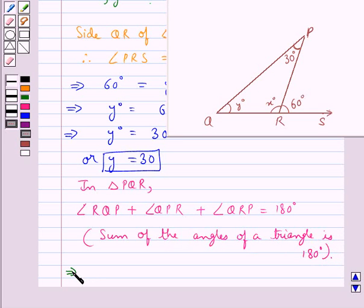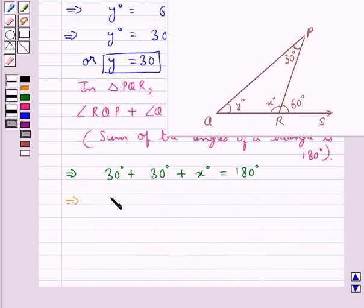So substituting the values for these angles, we get angle RQP, which is y degrees or you can say 30 degrees, plus QPR, which is 30 degrees, plus QRP, which is x degrees, is equal to 180 degrees. So this further gives us 60 degrees plus x degrees is equal to 180 degrees, that is x degrees is equal to 180 degrees minus 60 degrees. So we get x degrees is equal to 120 degrees, or you can say that x is equal to 120.